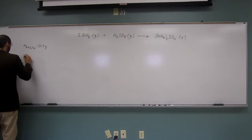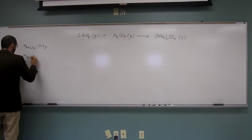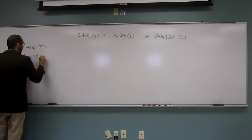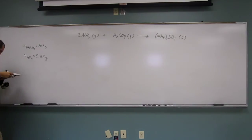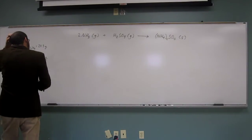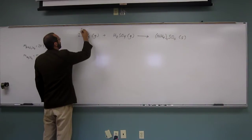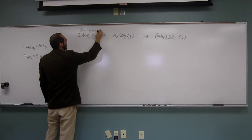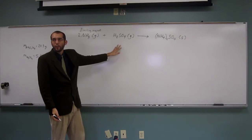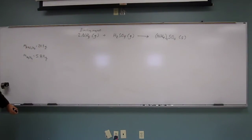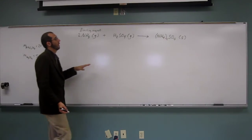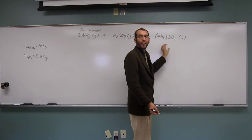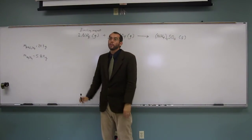The mass of ammonium sulfate is 20.3 grams, and the mass of sulfuric acid remaining is 5.89 grams. So the starting mass of each reactant — this tells us that ammonia was the limiting reagent. Why? Because there's still sulfuric acid left over. That means the amount of ammonium sulfate came directly from the amount of ammonia.